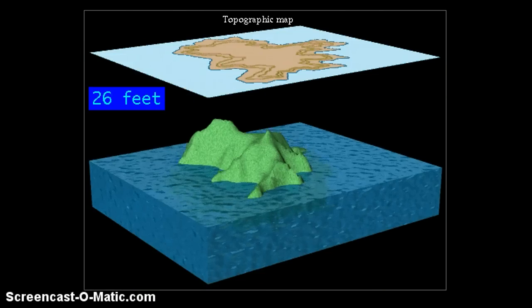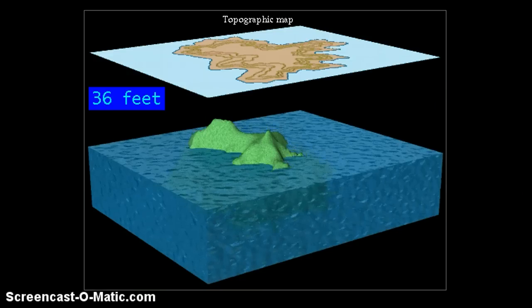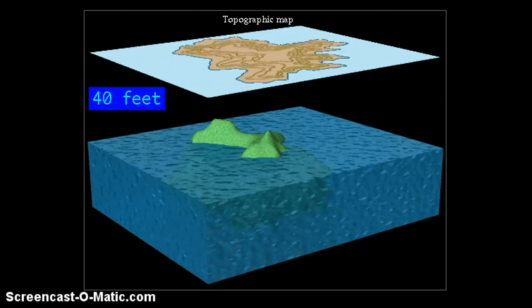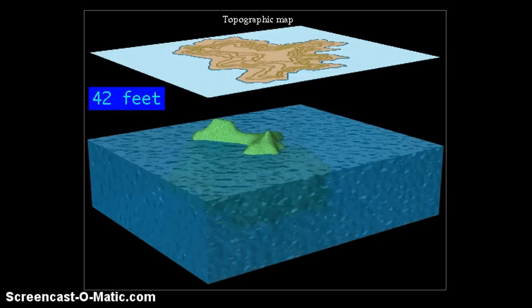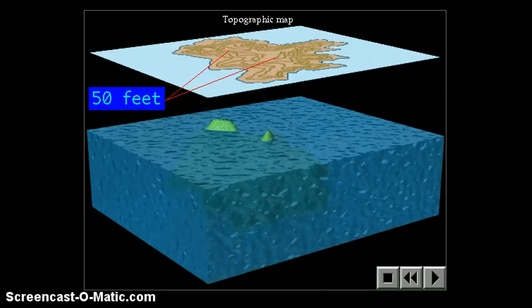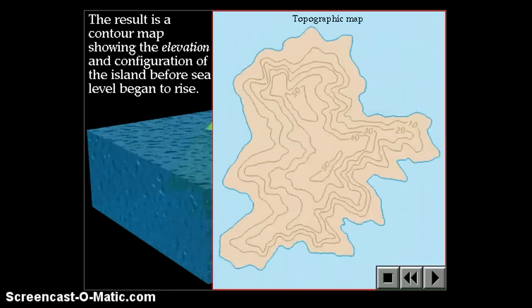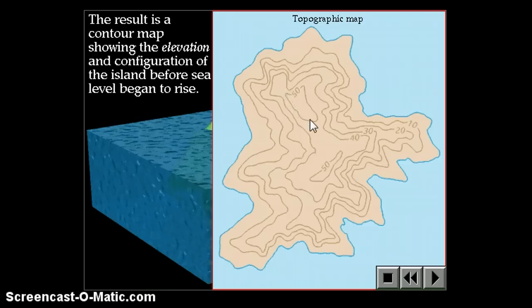Raise it 10 more feet and trace the 30-foot contour line. Raise 10 more feet and trace the 40-foot contour line. Raise 10 more feet and trace the 50-foot contour line. Notice that we're going to have two tracings, one around this peak and one around that peak. They're no longer connected to each other. And we can see that in the map that we traced. Here's one of the 50-foot contour lines and here's the other 50-foot contour lines.